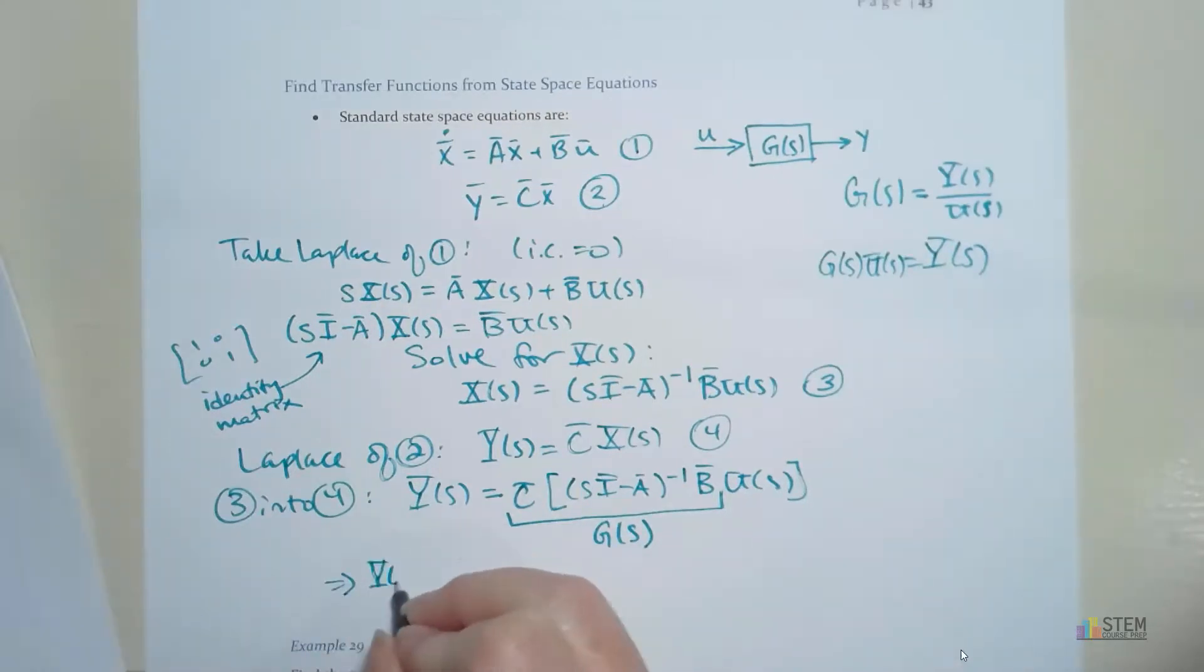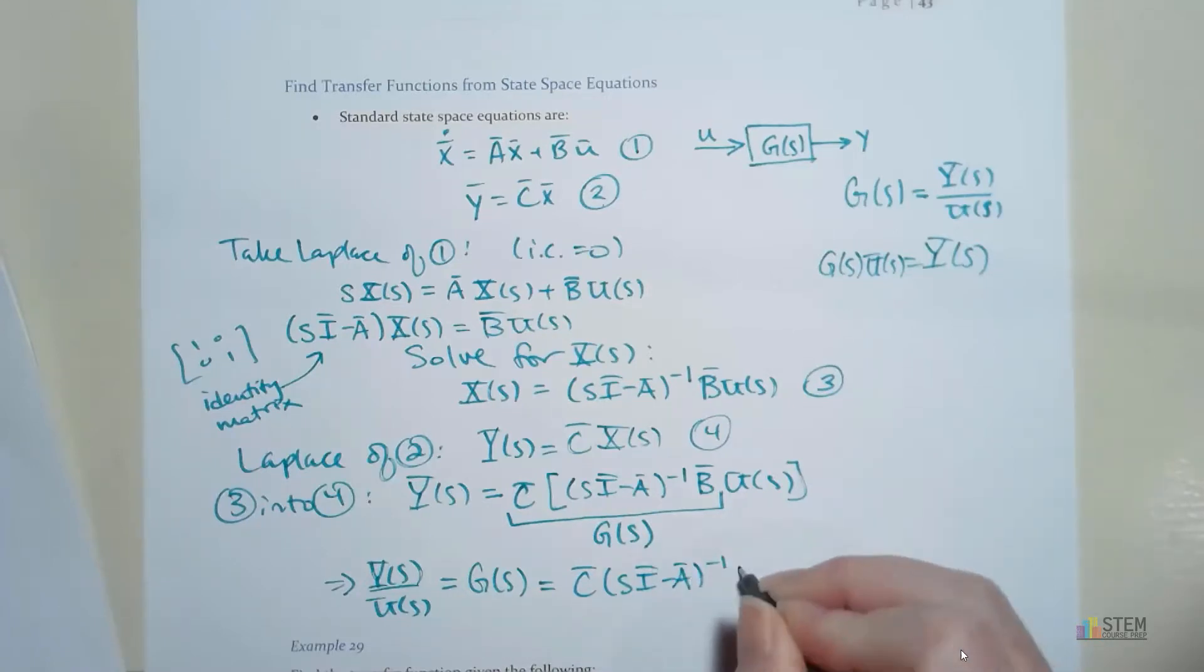So if we rewrite this we're going to get that Y of S over U of S equals G of S and then G of S is going to equal all of this in here. So C times S I minus A inverse times B. This is going to be your equation that you need.